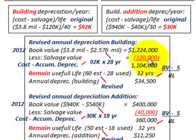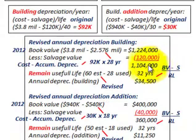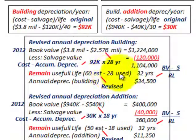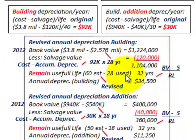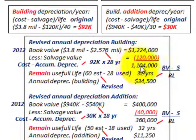We then subtract the salvage value of $120,000, which hasn't changed, giving us a net book value less salvage of $1,104,000. The remaining useful life is the revised estimate of 60 years less the 28 years already used, giving 32 years remaining. Dividing $1,104,000 by 32 years gives a revised annual depreciation on the building of $34,500.